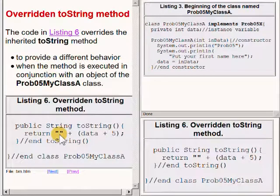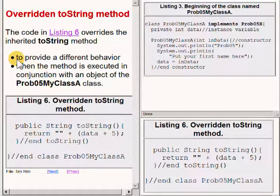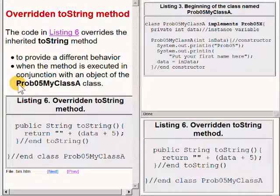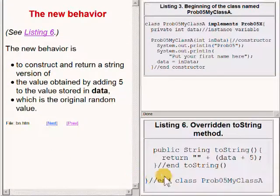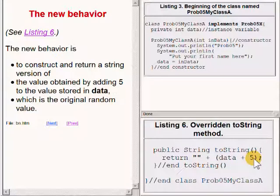The code on the bottom right of your screen overrides the inherited toString method. The overridden version provides a different behavior when the method is executed in conjunction with an object of the class named prob05myclassa. The new behavior is to construct and return a string version of the value obtained by adding five to the value stored in the instance variable named data, and concatenating that value with an empty string.